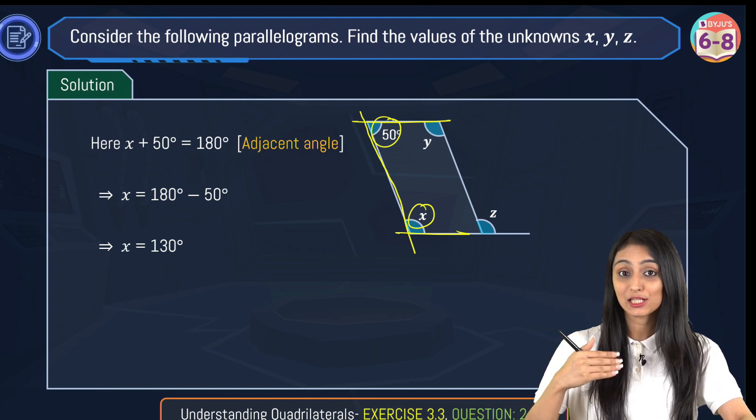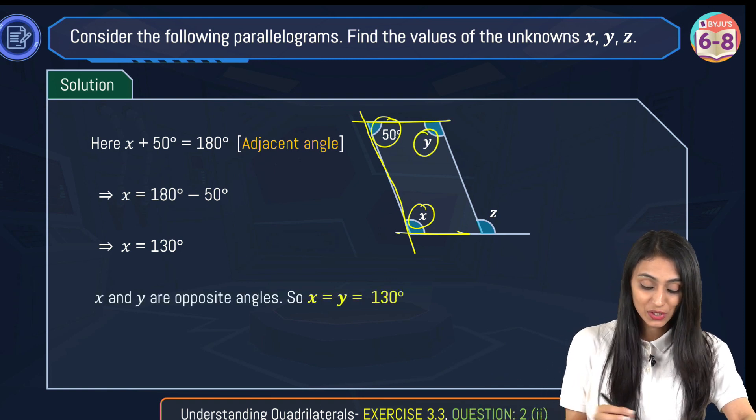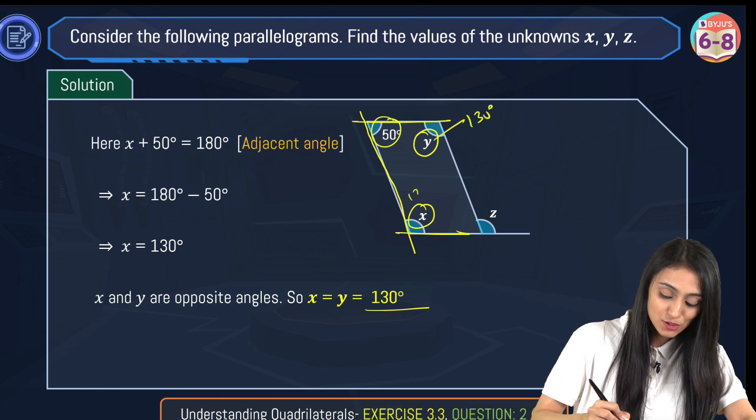Now we also know that opposite angles of a parallelogram are equal. So x and y are going to be equal in that case. So I can say that both of their values are going to be 130 degrees. This is also 130 degrees.